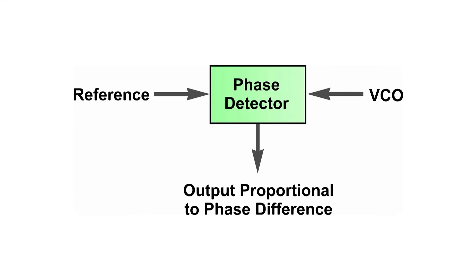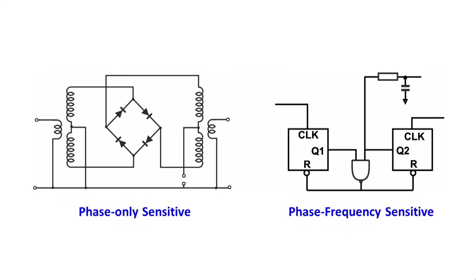There are several types of detector, and two of them are shown below. A complete discussion of this is really a topic for another video or more. So for the moment let's just concentrate on the fact that it generates a signal proportional to the phase difference.